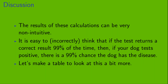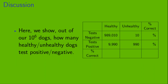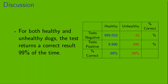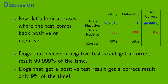Let's make a table to look at this more. Out of our 1 million dogs, we look at how many healthy or unhealthy dogs test either positive or negative. For both healthy and unhealthy dogs, the test returns a correct result 99% of the time. Of the 999,000 healthy dogs, 989,010 correctly test negative, and 9,990 incorrectly test positive. Of the 1,000 unhealthy dogs, 10 incorrectly test negative and 990 correctly test positive. So 99% of both healthy and unhealthy dogs get a correct test result. Now let's look at cases where the test comes back positive or negative.